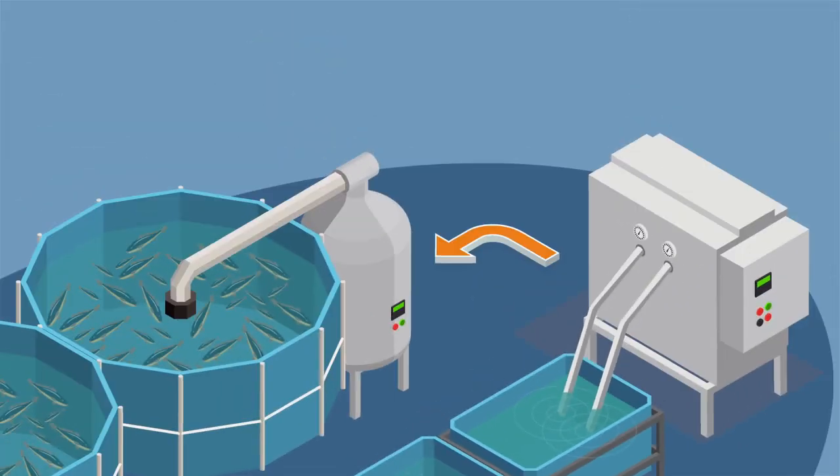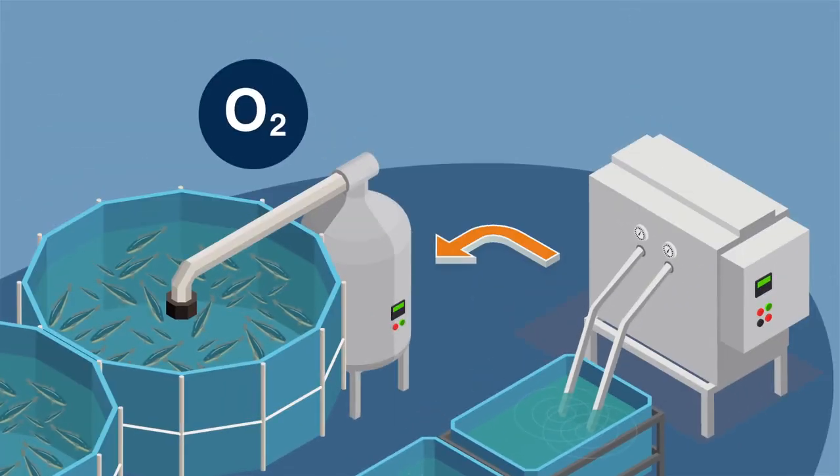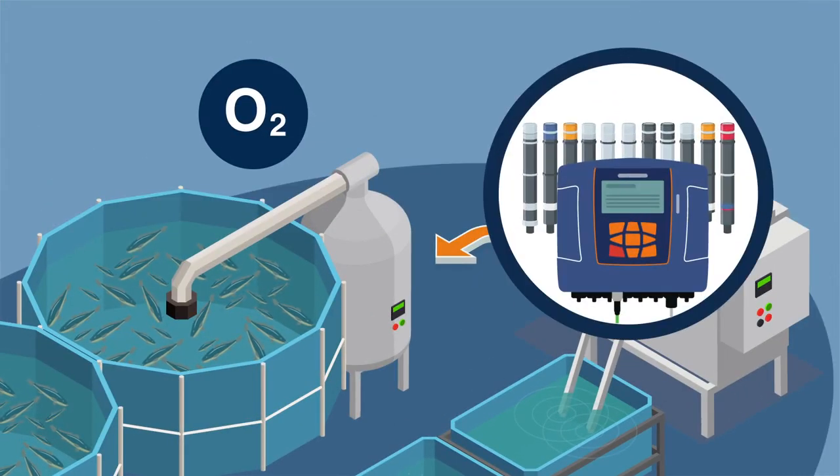Dissolved oxygen in processed water is one of the most critical parameters in healthy fish farming, which can be determined by our ProMinent sensor, DO3.